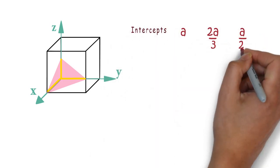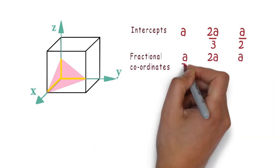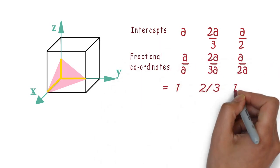So intercepts here will be a, 2a/3, and a/2. Now the fractional coordinate will become 1, 2/3, and 1/2. So when we take reciprocal we will have Miller Indices as 1, 3/2, and 2.